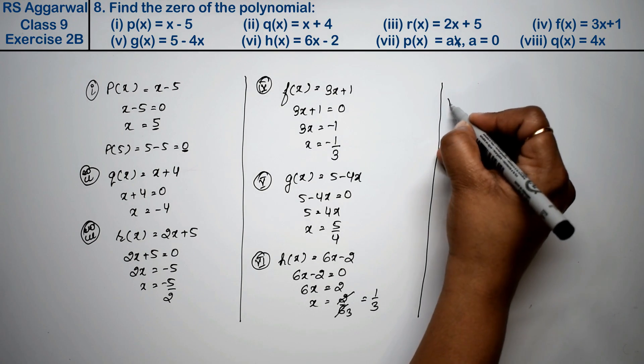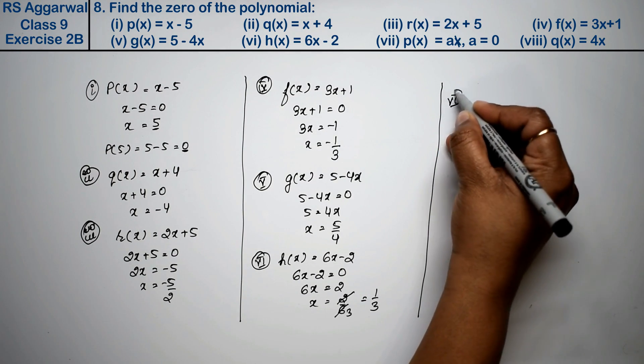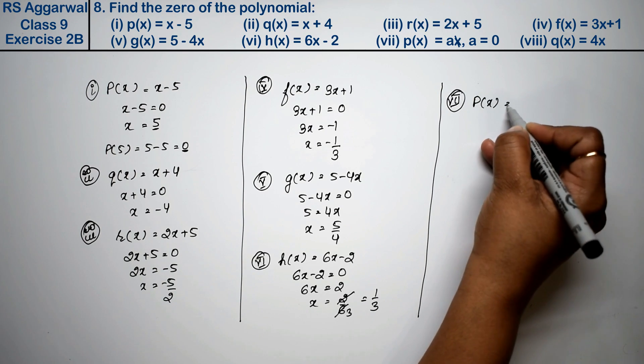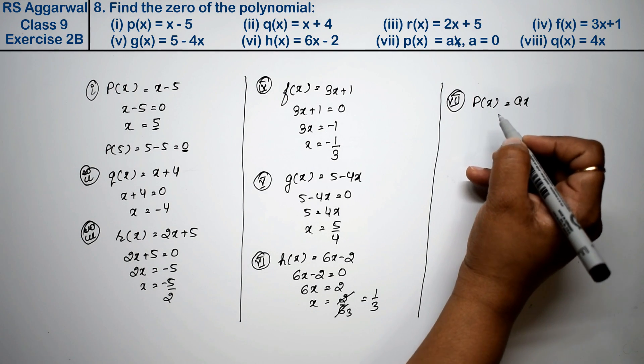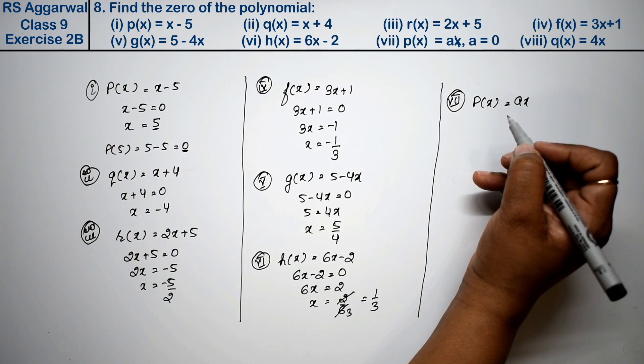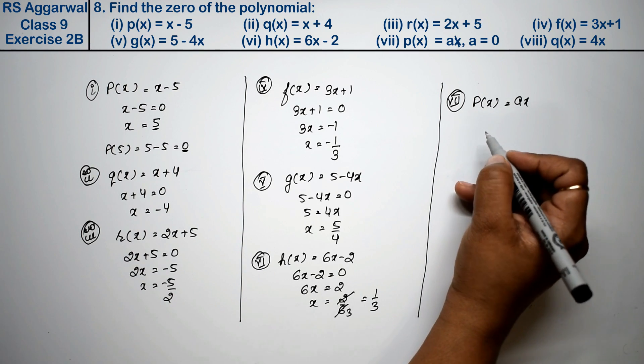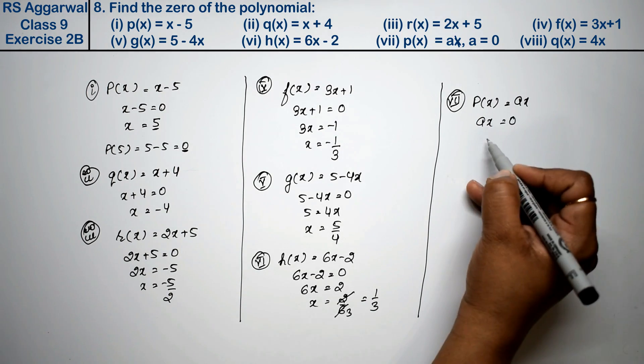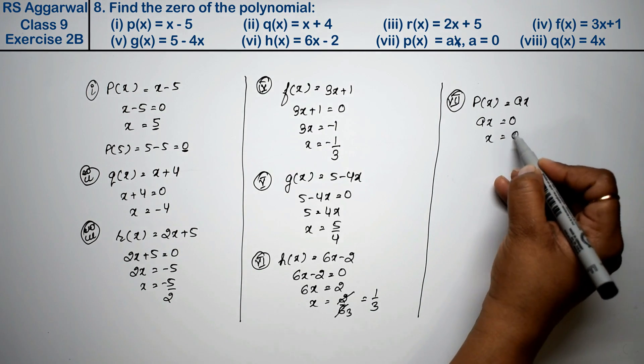Seventh part: p(x) equals ax where a is not equal to 0. If a is some constant, then setting ax equals 0, what will be the value of x? It will be 0 upon a, which means zero is the answer.